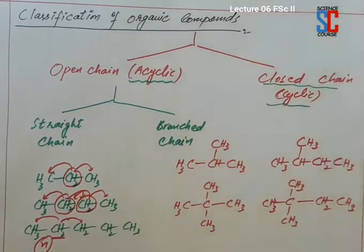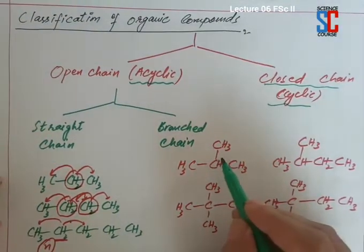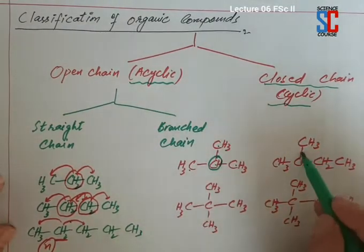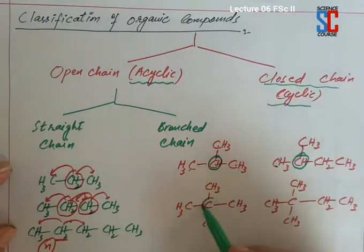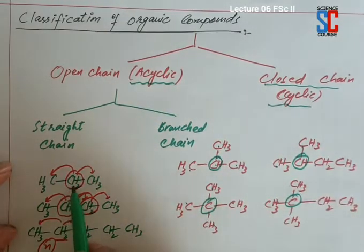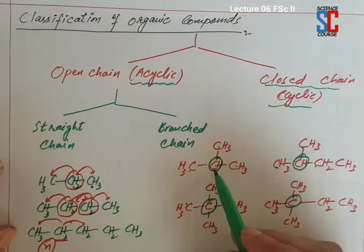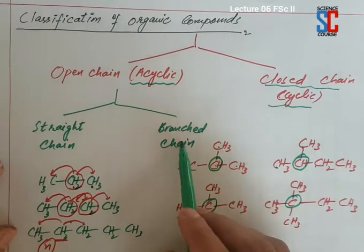Branch chain hydrocarbons are classified into two types: those in which one carbon atom is directly attached with 3 carbon atoms, and those in which one carbon atom is directly attached with 4 carbon atoms. When one carbon atom is directly attached with 2 carbon atoms this is called straight chain hydrocarbon, and when one carbon atom is directly attached with 3 or 4 carbon atoms these are called branch chain.